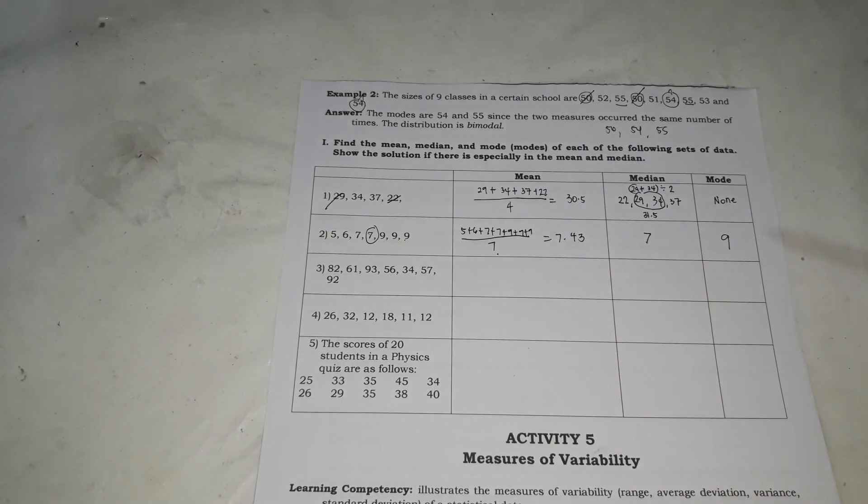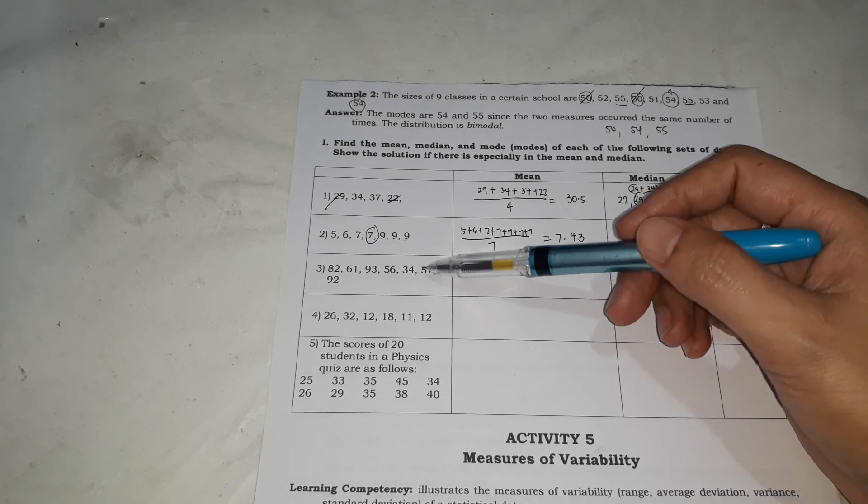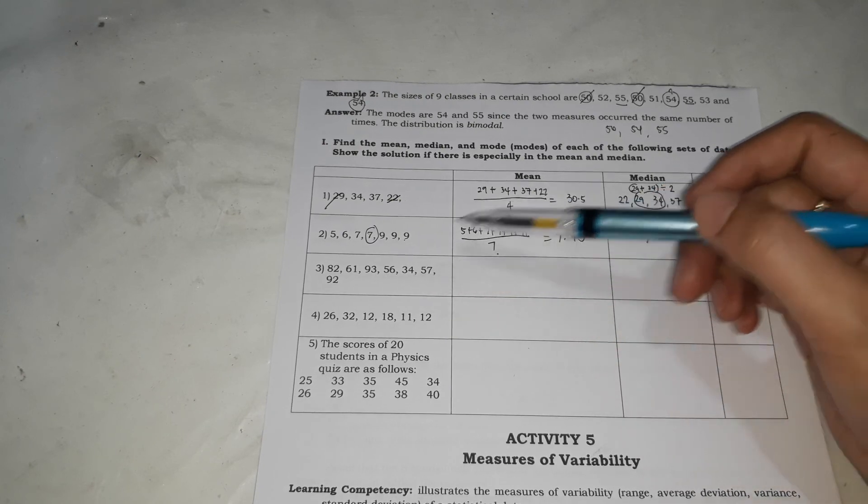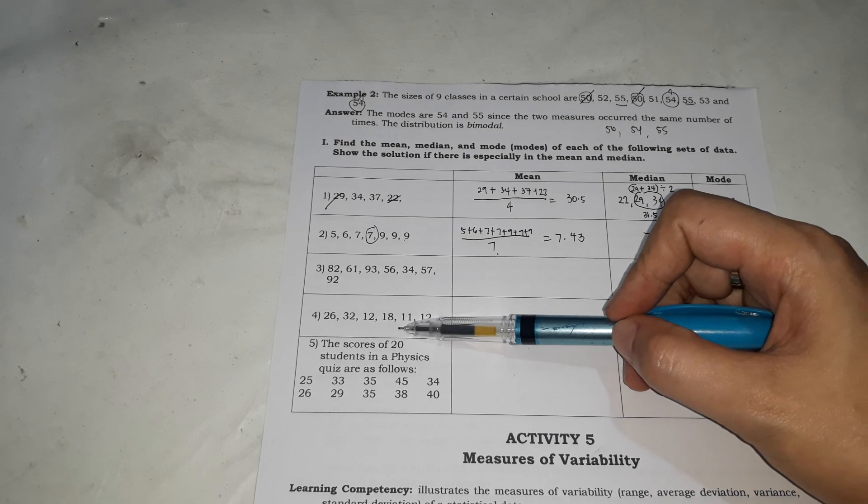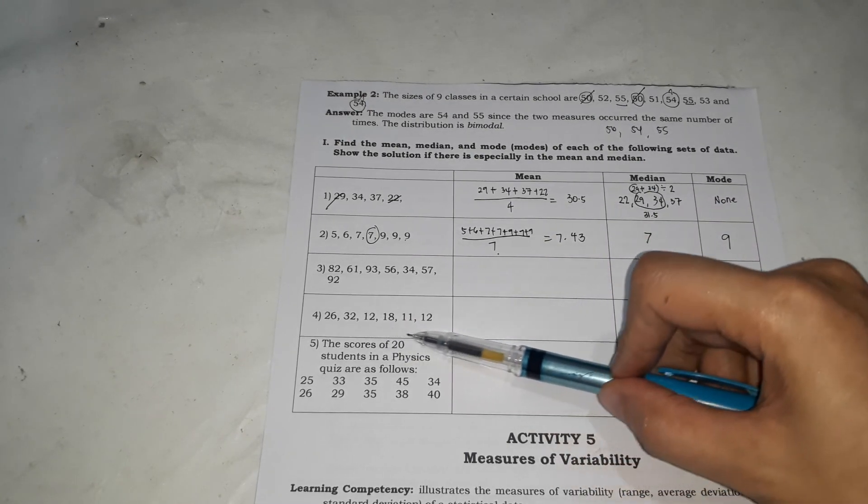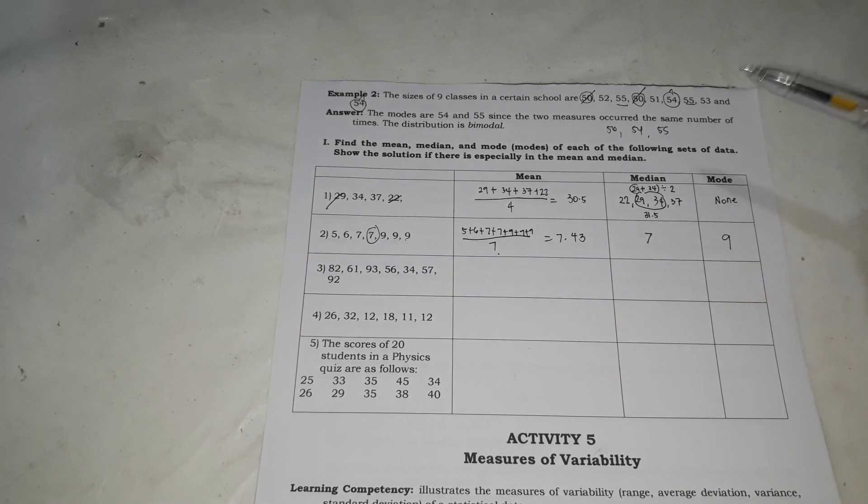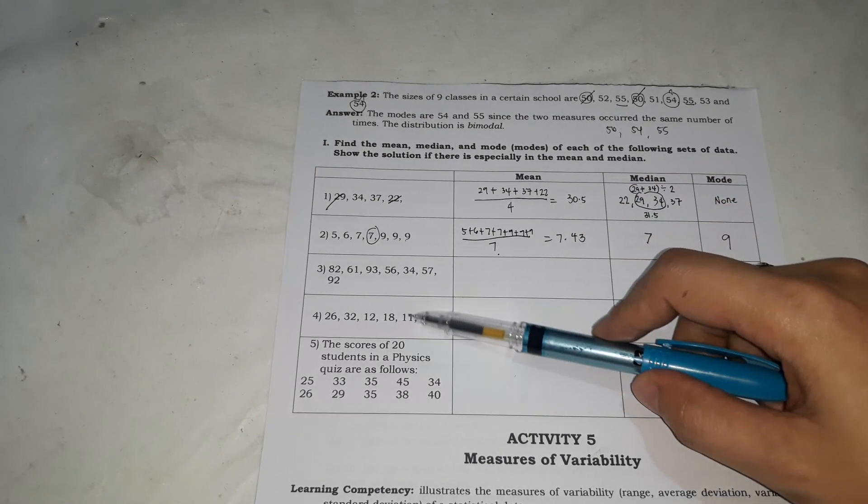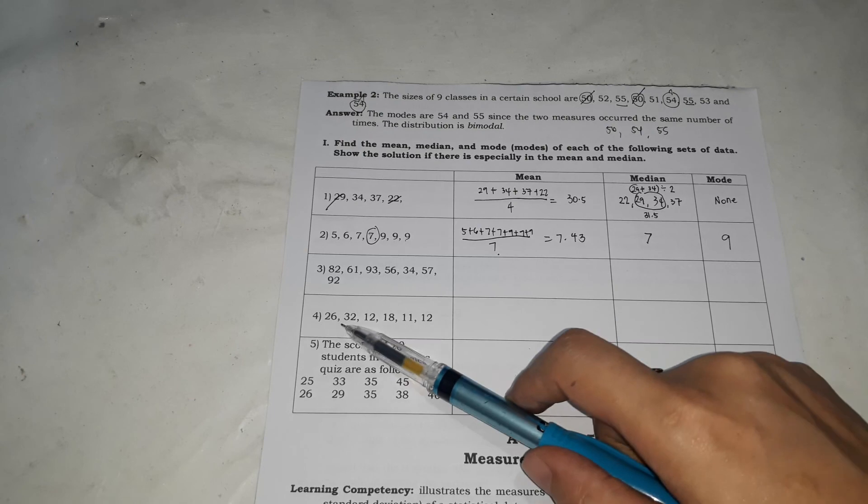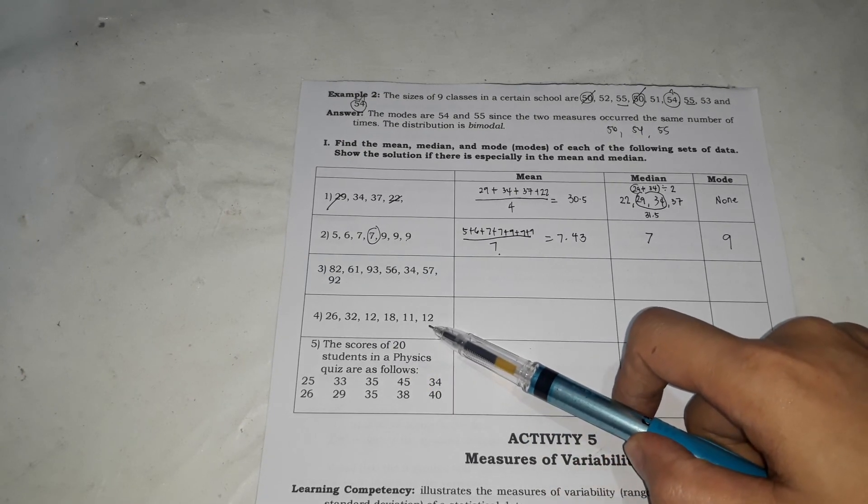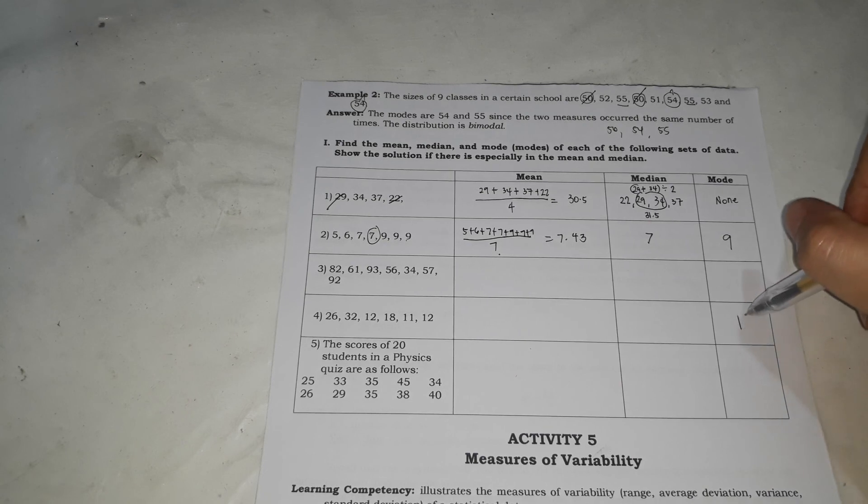So that's how you're going to solve for the mean, median, and mode. So all you have to do in here, the same process lang. In here, i-plus mo, divide mo by 1, 2, 3, kung ilan sila. Tapos for median, i-arrange mo sila from highest to lowest. So lowest to highest. Tapos identify mo lang yung nasa gitna. Yung dalawang yung nasa gitna, i-plus mo at saka divide. And then for mode, identify mo lang kung sino ang pinakamarami. So dito, diba, titignan natin ang pinakamarami dito si 12. Kasi siyang kadalawa. So in here, the mode is 12. So that's how you're going to answer for the mean, median, and mode. Thank you.